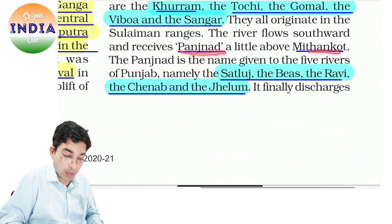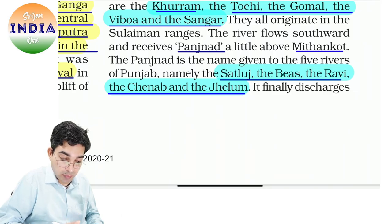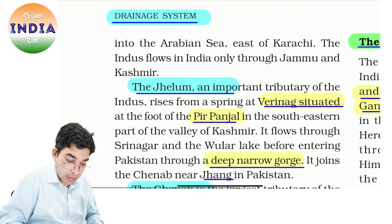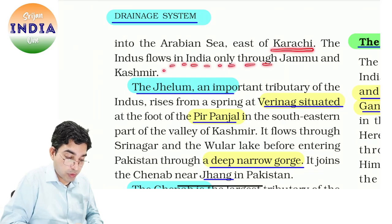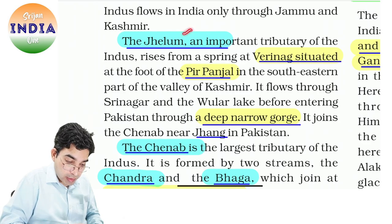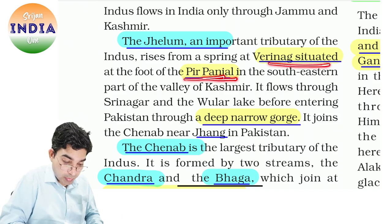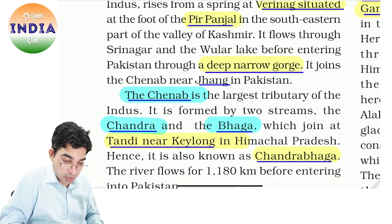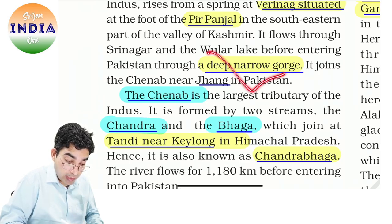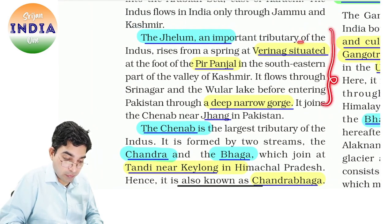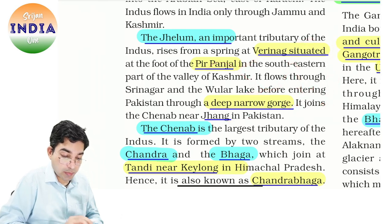River flow hoti hai southward — Panjnad mein, Panjnad mein Mithankot ke paas. Panjnad is the name given to five rivers — isi se Punjab bana — five rivers se Punjab bana: Sutlej, Beas, Ravi, Chenab aur Jhelum. Finally ye discharge karti hai Arabian Sea mein, Karachi pe. Indus flows through only Jammu and Kashmir in India. Ab tributaries dekhte hain — Jhelum important tributary hai Indus ki. Yeh spring at Verinag, situated at the foot of Pir Panjal, southeastern part of Valley of Kashmir. It flows through Srinagar and Wular Lake before entering Pakistan through a deep narrow gorge.